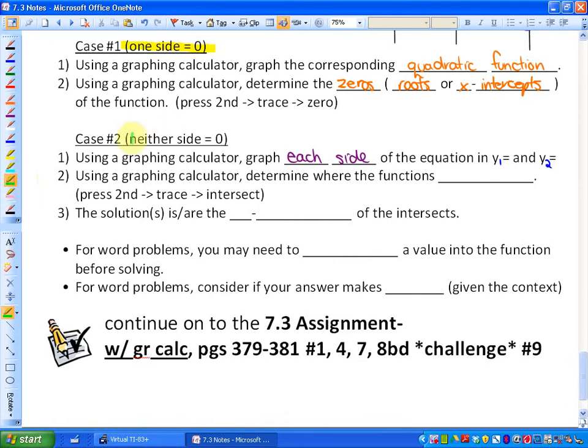In the second part of 7.3, we looked at an example where neither side equals zero. So we're looking at an example like x squared plus 2x is equal to 2x squared minus 7x. Or something like that. In that case, we wanted to know where the two functions are equivalent to each other. So using a graphing calculator, you graph each side of the equation in y1 and y2. Secondly, you're going to find that they intersect. So using a graphing calculator, you're going to determine where the functions intersect. Using these press second, trace, and intersect. And thirdly, the solution or solutions is or are the x coordinates. So we just want to know what value of x where these intersect.